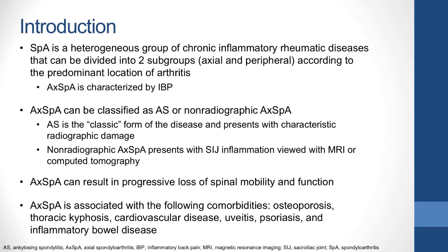Patients with peripheral SPA have symptoms predominantly localized to peripheral joints. Axial SPA can be classified as either ankylosing spondylitis or non-radiographic axial SPA. Ankylosing spondylitis, or AS, is considered the classic form of axial SPA and presents with characteristic radiographic damage. Non-radiographic axial SPA presents without radiographic changes and is characterized by sacroiliac joint inflammation detectable by MRI or computed tomography, or CAT scan.